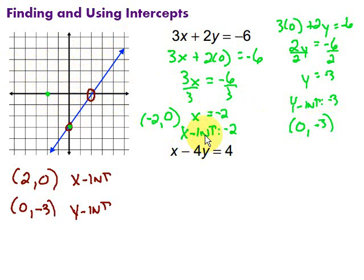Notice that those ordered pairs are also in those same places. You could think about it either way, the intercept being on that axis, or go to that ordered pair, that point. So then from there, I can draw my line. Draw the line through here, something like that. So there's the graph of that particular line using the intercepts.